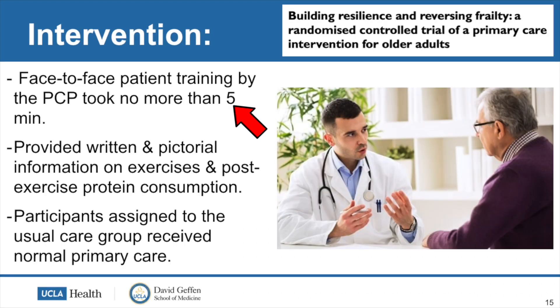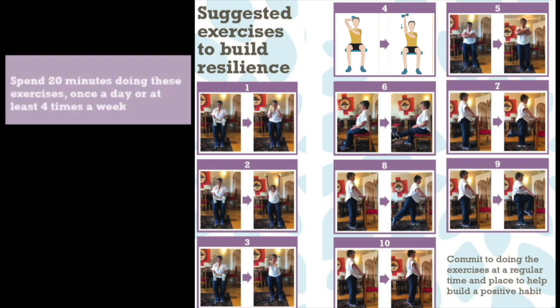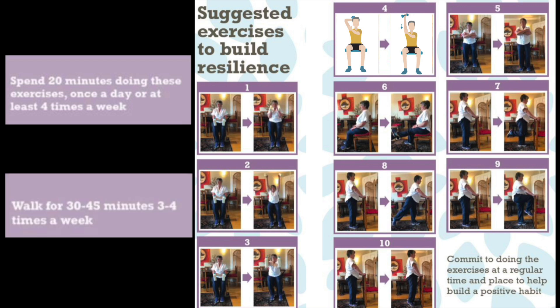Face-to-face patient training by the primary care physician took no more than five minutes. They provided written information along with pictures on exercises and protein consumption. Participants were encouraged to do 10 separate strength training exercises, spending at least 20 minutes per day performing these exercises at least four times per week. In addition, it was recommended they walk for 30 to 45 minutes three to four times per week.